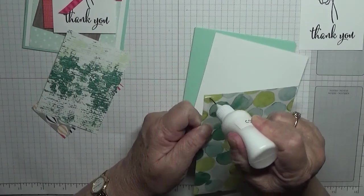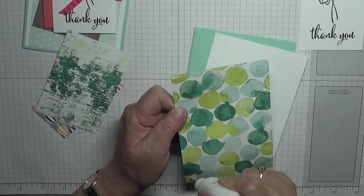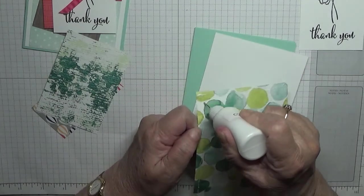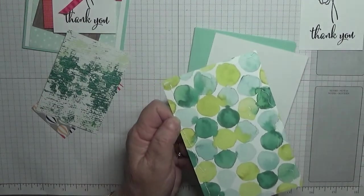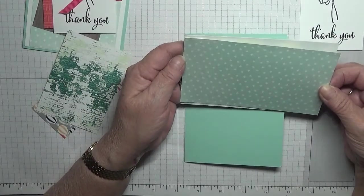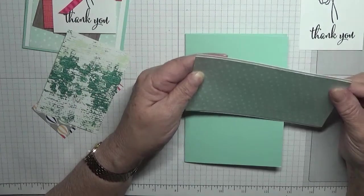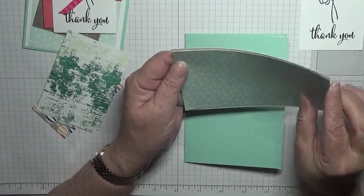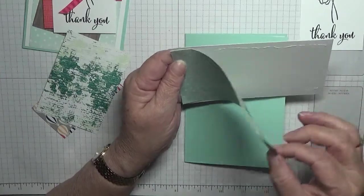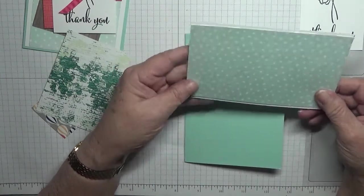Right. With the pool party DSP, we're going to stick that to the white. With a border either side. Very straight. That's it.